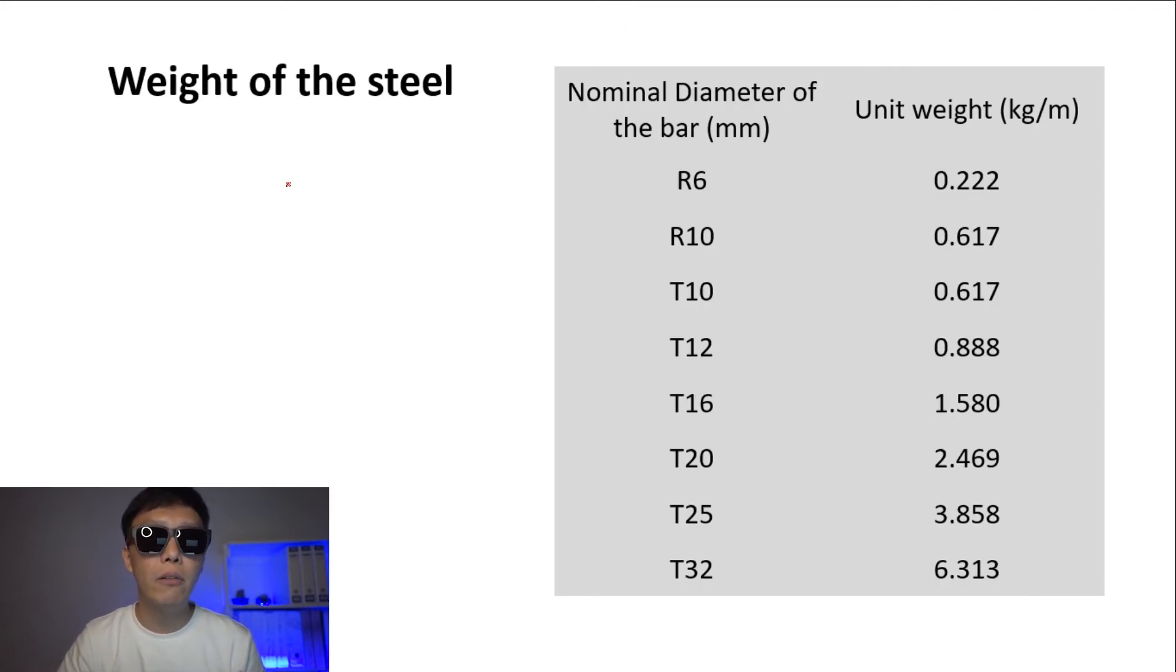The next important thing about reinforcement steel is the weight of the steel. It is important for us to convert the length measured from drawing to weight of steel bars. Different sizes of diameter have their own unit weight which we call kg per meter. Look at this table. R6 means mild steel bar in 6mm diameter. It has the weight of 0.222 kg for every 1 meter length.